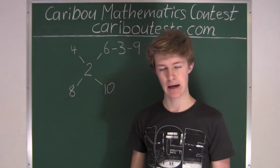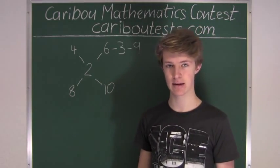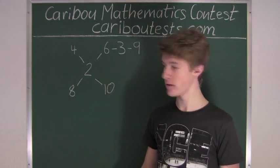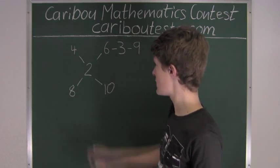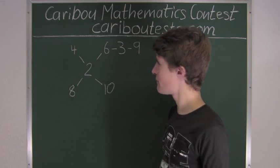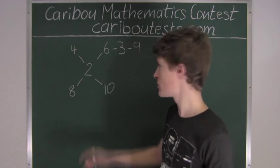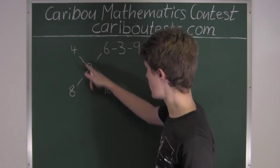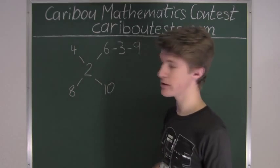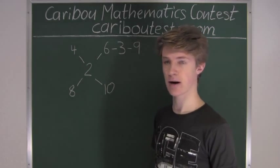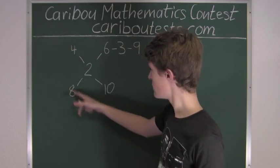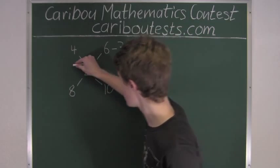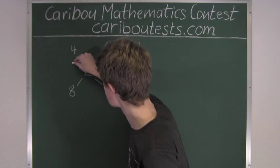Now let's go to 4. 4 is already written here, and we know that 4 has a factor which is 2, and that's already linked to it. But it also has a multiple which is 8, so we can link those two.